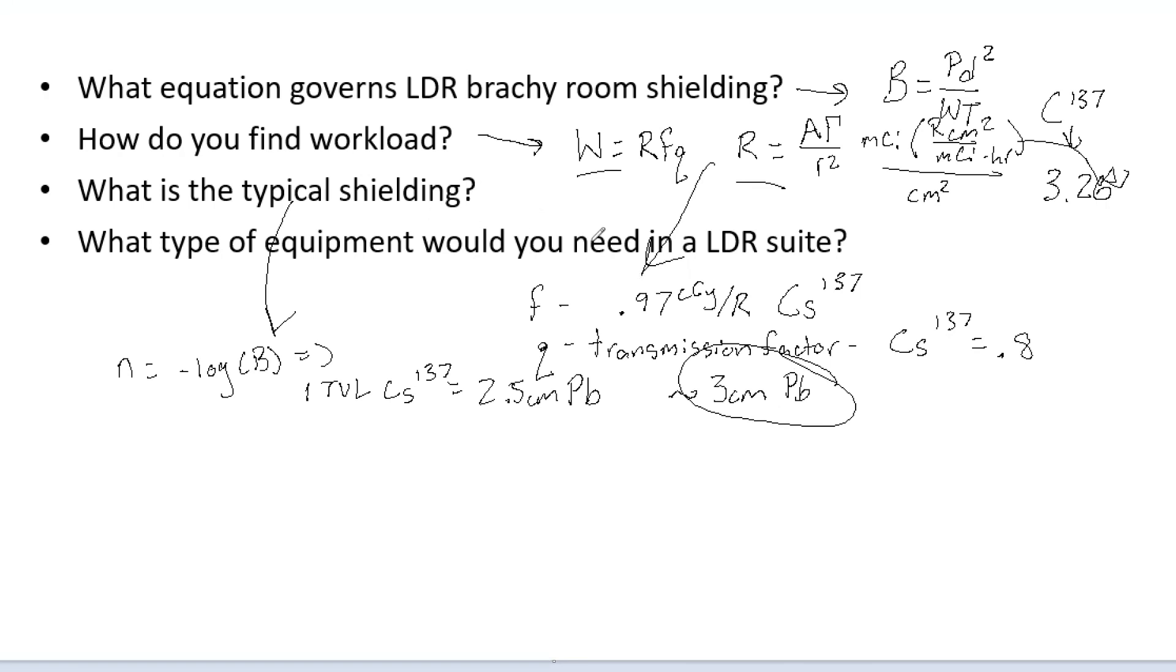And then finally what equipment do you need in an LDR suite? Think about it tangibly how you would do assays, what you would need in that LDR suite. So you would want an emergency pig if for some reason you would need to put a nuclide in there. You would want a visitor chair. You would want a Geiger counter. You would want a movable lead shield. Be sure to have a stopwatch. All the emergency equipment and that is ultimately the basis of LDR brachyroom shielding.